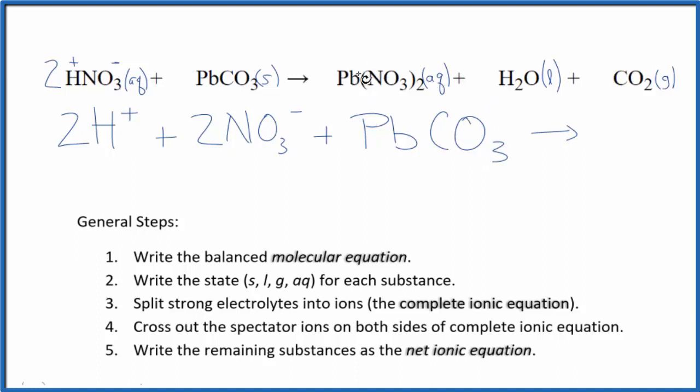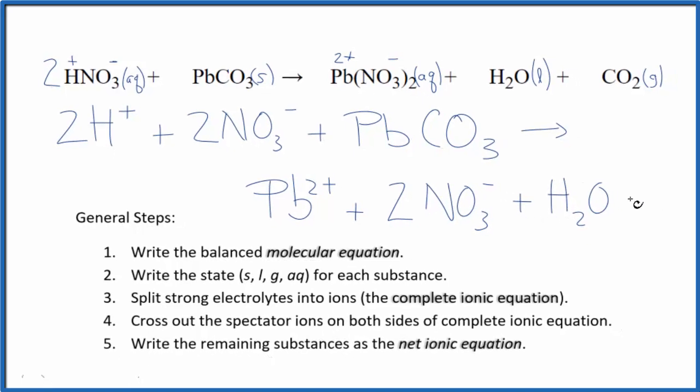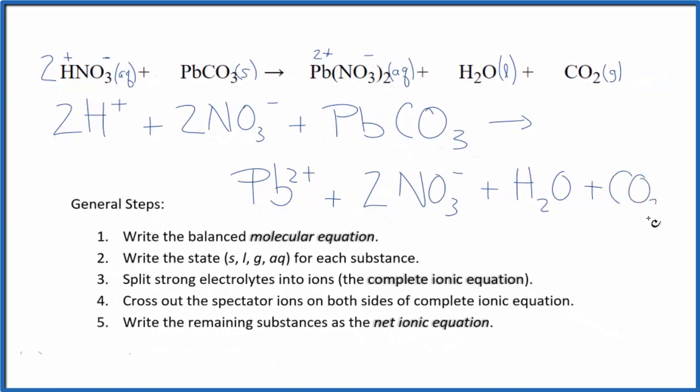Lead, we can't tell the charge on that just by looking at Pb. But we know that nitrate is 1 minus. So we have 2 times 1 minus, 2 minus, that has to be 2 plus. So we have the lead 2 ion, Pb2 plus, plus 2 of these nitrate ions. Water, we don't split that apart because it's a liquid. And carbon dioxide, that's a gas, we don't split that apart either. So this is our complete ionic equation for HNO3 plus PbCO3.